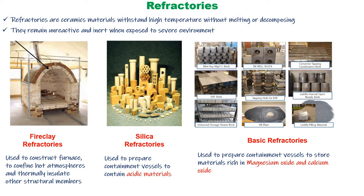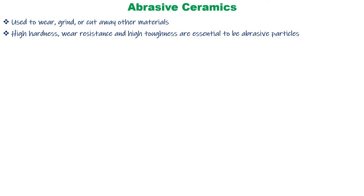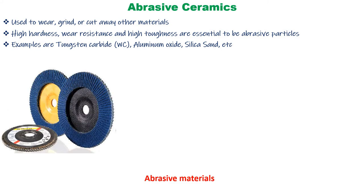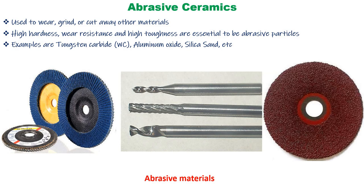Abrasive ceramics are materials used to wear, grind, or cut away other materials. They should have high hardness, wear resistance, and high toughness. Examples include tungsten carbide, aluminum oxide, and silica sand. Cutters, drillers, and polishers are coated with this kind of abrasive ceramic so that they can work on softer materials.